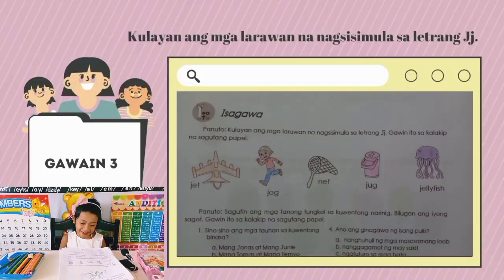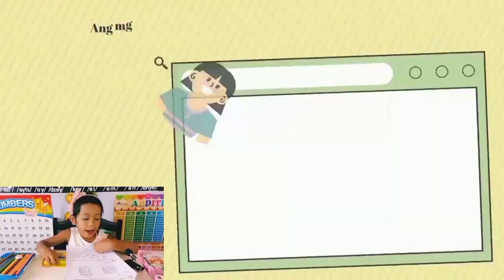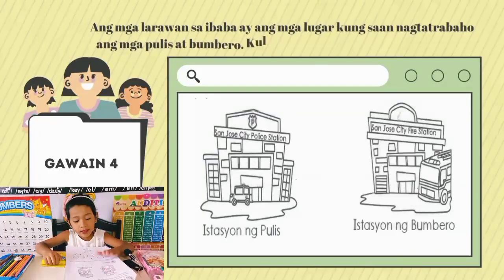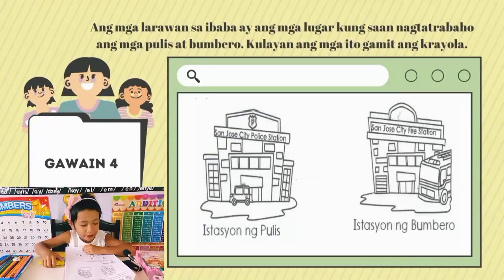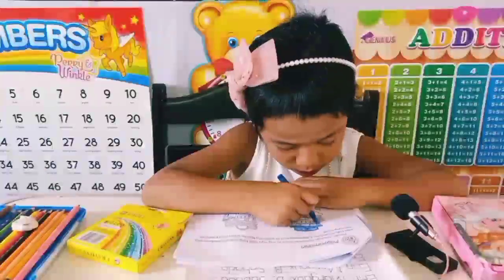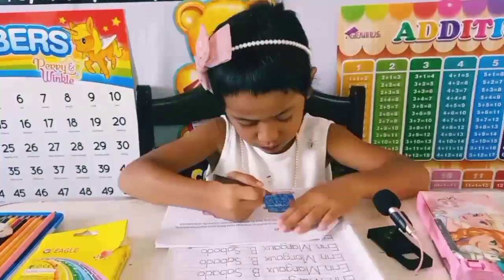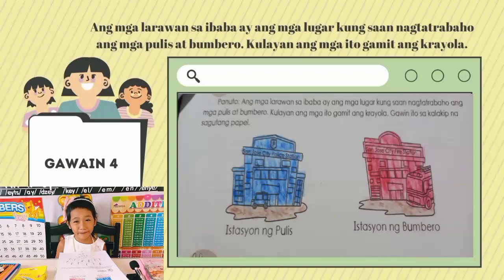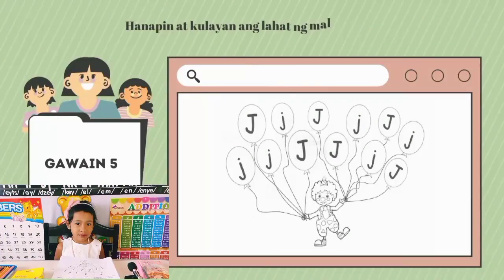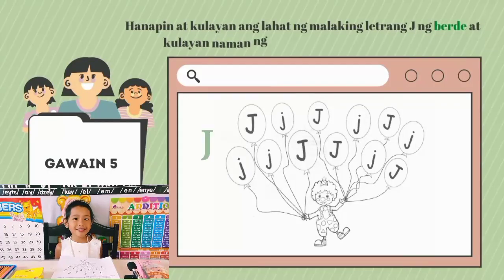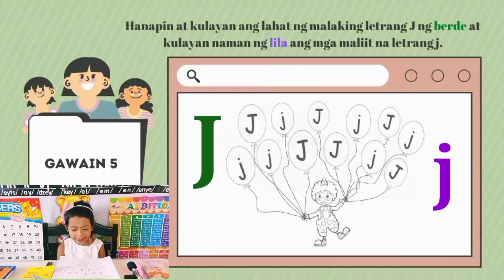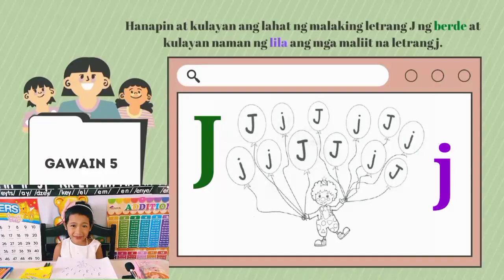Mga salitang nagsisimula sa letrang J. Ang mga larawan dito ay mga lugar kung saan matatagpuan ang mga pulis at bombero. Kulayan ang mga ito gamit ang kulay ora. Tara, kulay na tayo. Ang istasyon ng pulis at bombero. Hanapin at kulayan ang lahat ng malalaking letrang J ng kulay verde, at kulayan naman ng lila ang mga maliit na letrang J. Tara, kulayan na natin.